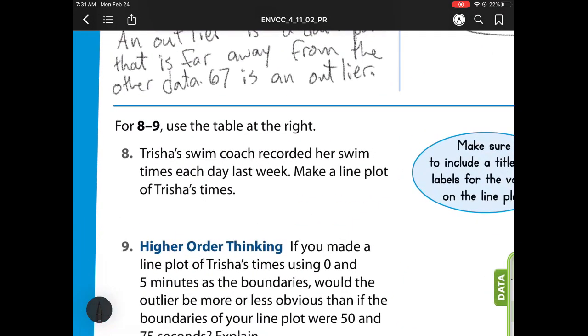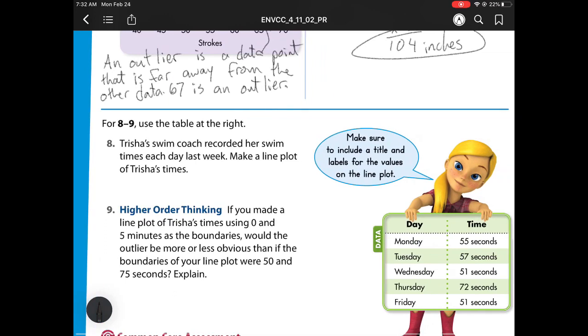Number 8. Use the table at the right. Trisha's swim coach recorded her swim times each day last week. Make a line plot of Trisha's time. So here I have a line plot. And it says, be sure to include a title and labels for the values in the plot. My label down here is going to be my time because those are the numbers I'm working with. And I see I go from 50 all the way to 72.